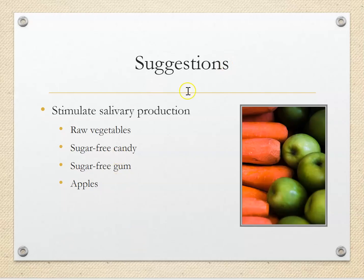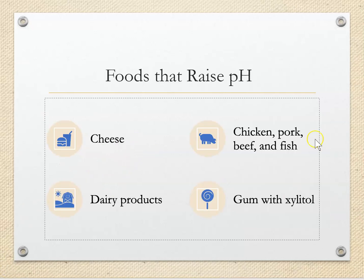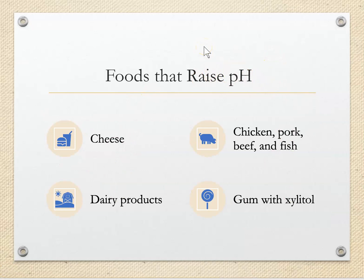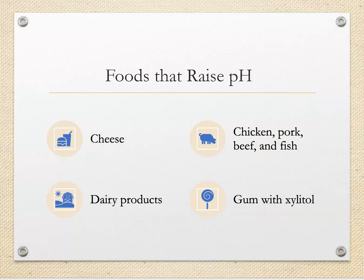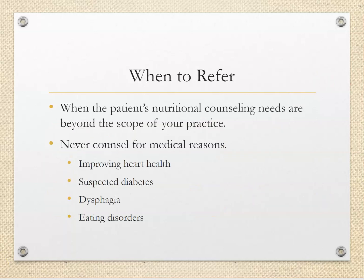To increase saliva, recommend raw vegetables, apples, sugar-free candy, and xylitol gum. To buffer acid and raise pH, recommend cheese, milk, chicken, pork, beef, fish, or xylitol gum alongside meals that lower pH.